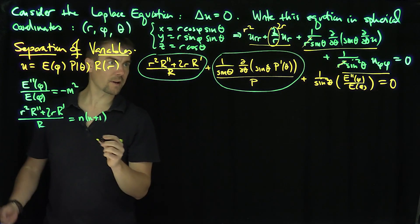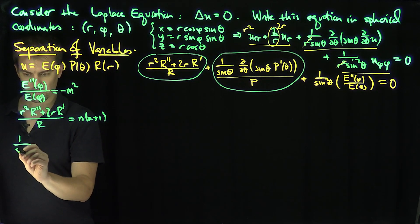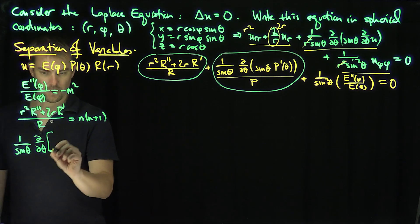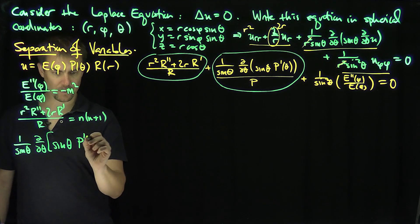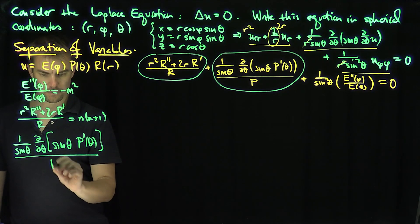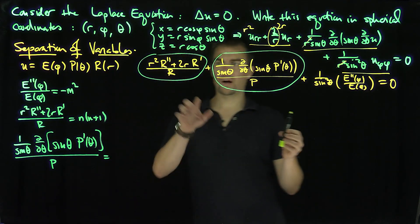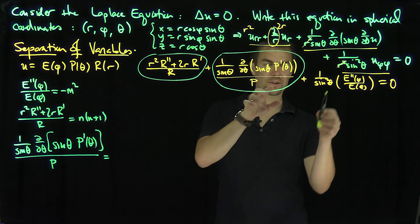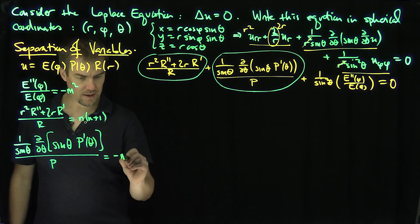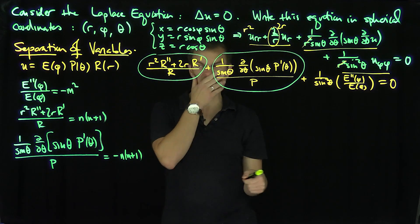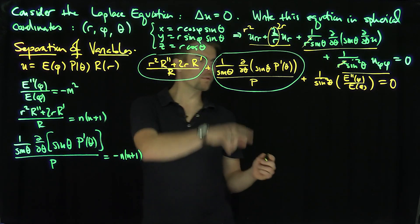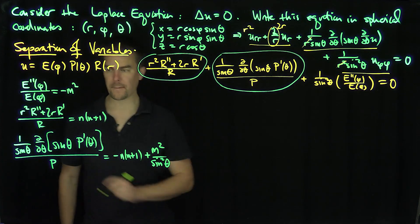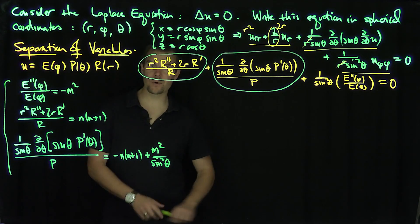Finally, this expression is where the spherical harmonics come into play. We have (1/sinθ) d/dθ [sinθ · P'(θ)] over P equal to −n(n+1) plus m²/sin²θ. This makes a consistent choice of separating the variables, and now we can solve these equations individually.